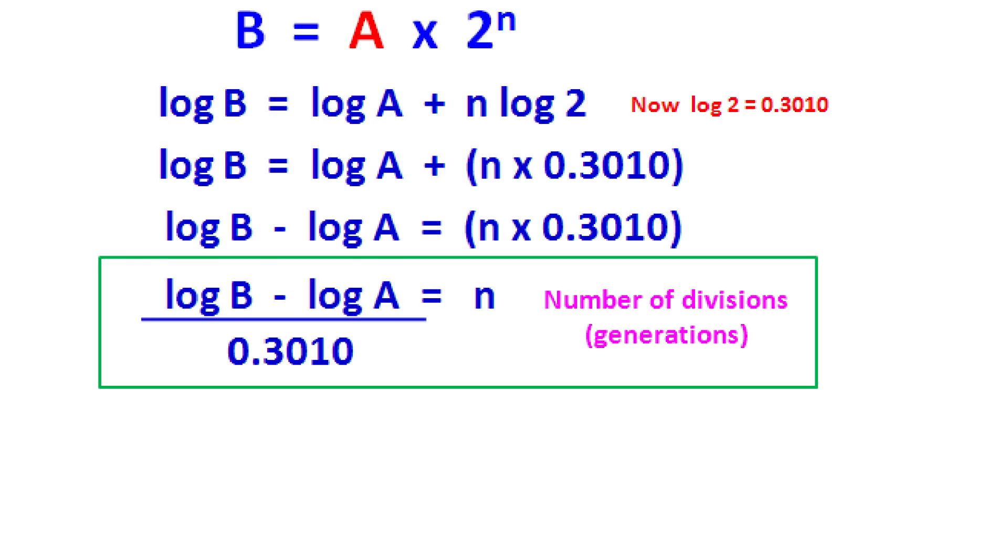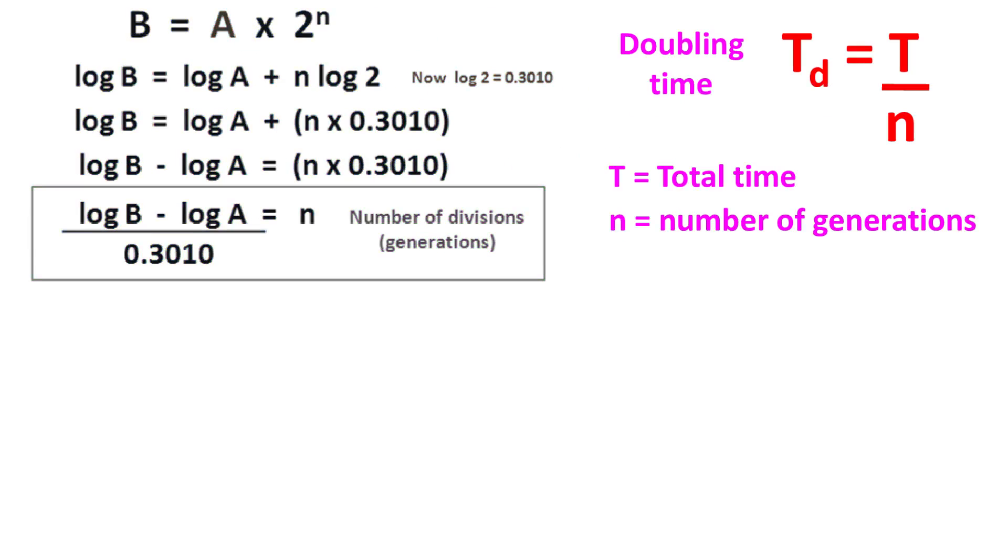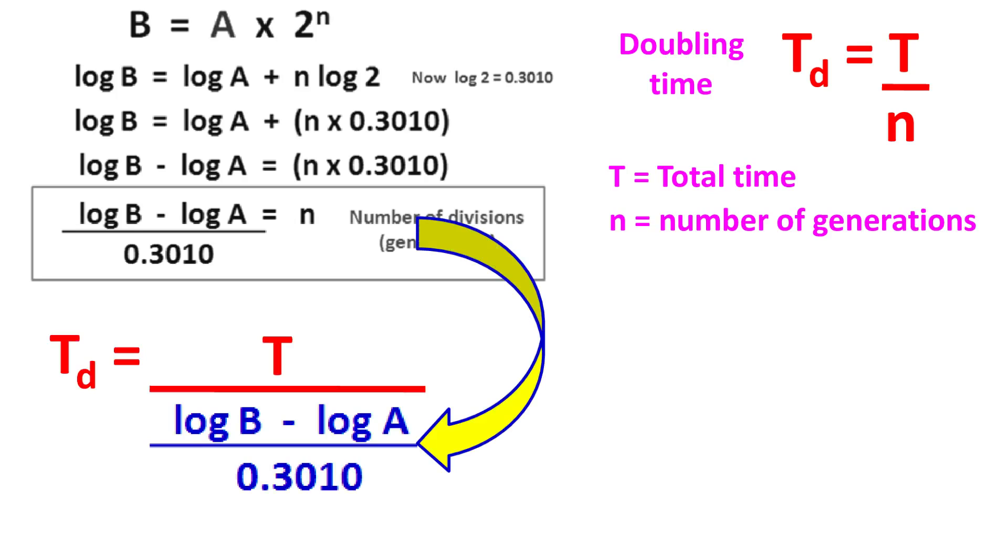Now the doubling time td is nothing but the time taken to complete n number of cell divisions. Hence, td equals t upon n. If we substitute n in this equation, then we get the following equation.